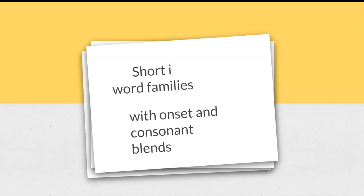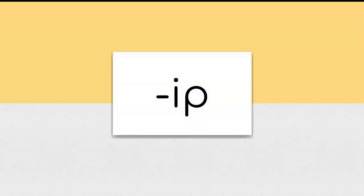Short-i word families with onset and consonant blends. The pattern is ip. Let's sound it out: ih, puh, ip. Remember, if you know the pattern, you can read and write the word. Let's get started.